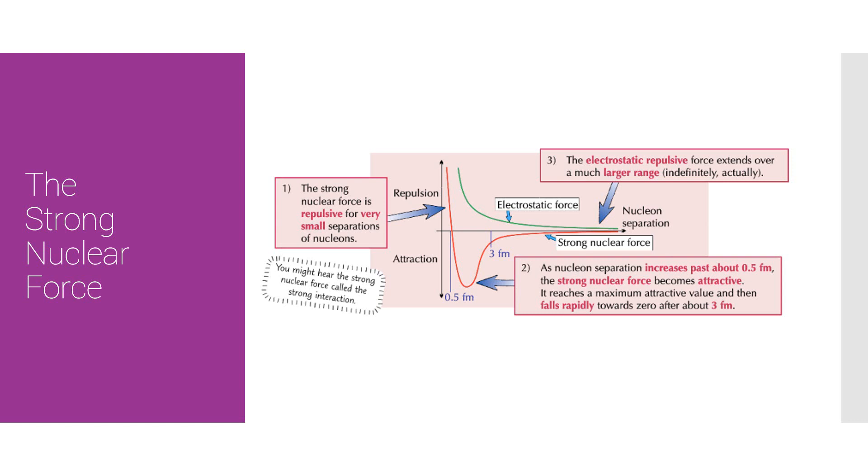So as you can see, the strong nuclear force is repulsive for very small separations of nucleons. That's what's stopping them from just colliding and collapsing into each other. And then as the separation increases past 0.5 femtometers the force becomes attractive, which holds them together, stops them from flying apart, and reaches a maximum attractive value. And then it just falls rapidly towards 0 after about 3 femtometers.